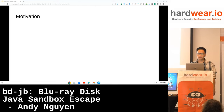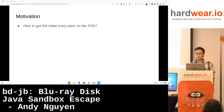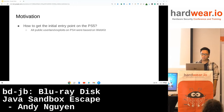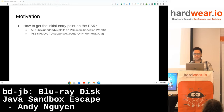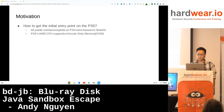What was the motivation behind this work? As a PlayStation hacker, I wanted to hack the PS5. All public user land exploits so far were using WebKit as the entry point. However, the PS5's AMD CPU now supports execute-only memory, and it is enabled for the text segments of all modules. This mitigation makes WebKit exploits much more difficult to pull off. The main reason is that JIT is not enabled in the renderer process, so we need a ROP chain in order to get native code execution.